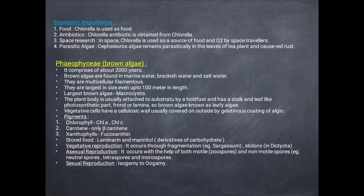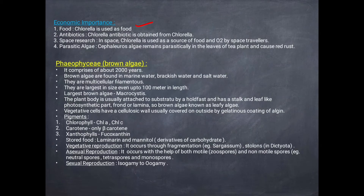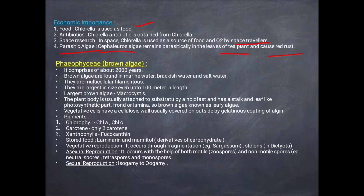Economic importance: green algae like Chlorella are used as food. Chlorella is also used as a source of food and oxygen. Red rust is a plant disease caused by Phaeophyceae. Next is Phaeophyceae, called brown algae.